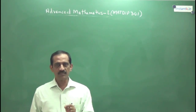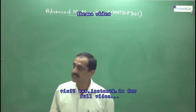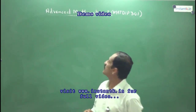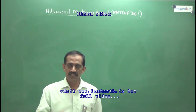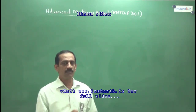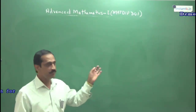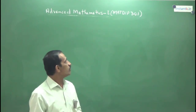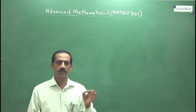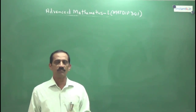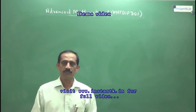In third semester you have to complete one subject: Advanced Mathematics 1, that is MAT DIP 301. In the next semester, fourth semester, you have to complete Advanced Mathematics 2, subject code MAT DIP 401. These two papers you have to clear, either in third semester or fourth semester, so you have to complete them from the beginning itself.